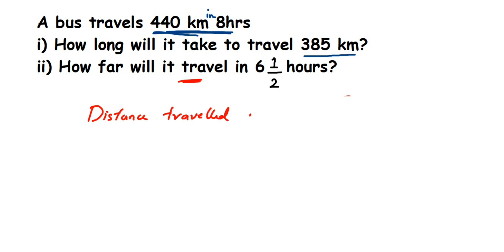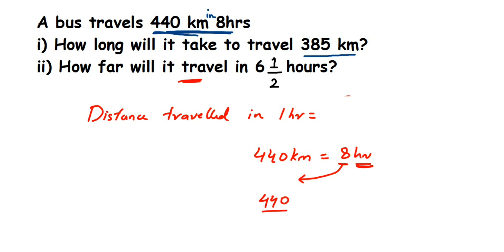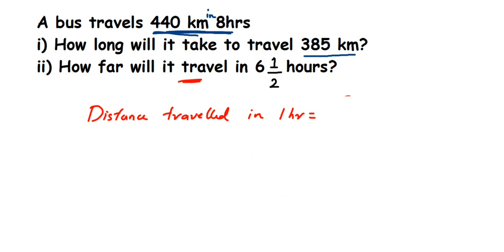440 kilometers equals 8 hours. To find distance in one hour, we transpose 8 to the other side: distance in one hour equals 440 divided by 8 kilometers. Six and a half, when converted to an improper fraction, equals 13 by 2 hours.